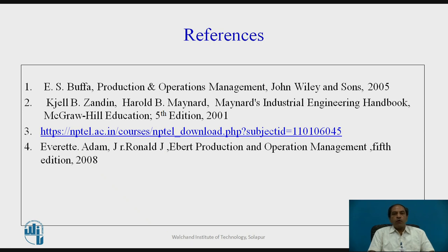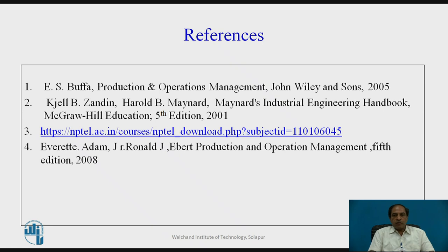In summary, today we covered a variety of forecasting models: starting with simple average, then moving average, then weighted moving average for improved accuracy, and finally exponential smoothing where the alpha factor ranges from 0 to 1, most commonly 0.1 to 0.3. Further methods such as regression and additional techniques will be studied in the next series of lectures. Thank you.